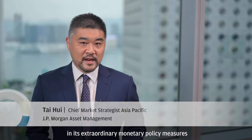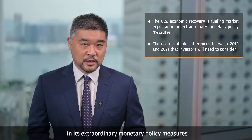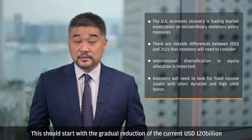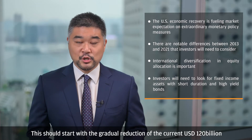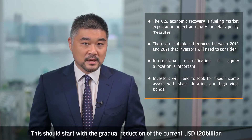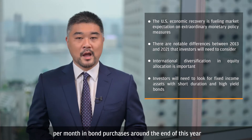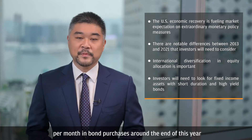Hello. Now, the ongoing economic recovery in the U.S. is fueling market expectations that the Federal Reserve could soon start to rein in its extraordinary monetary policy measures. This should start with a gradual reduction of the current $120 billion per month in bond purchases around the end of this year.